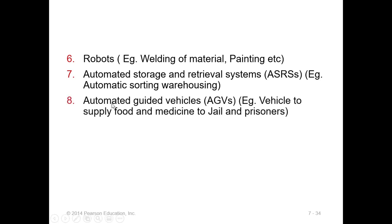Automated Guided Vehicles (AGVs) are robots that move around and deliver required items. They are very important where work is dangerous or risky. For example, in high-security prisons in America where highly dangerous criminals are held, automated vehicles are installed to deliver food and medicines to prisoners.